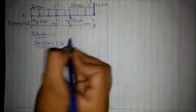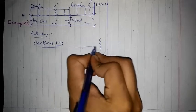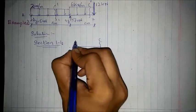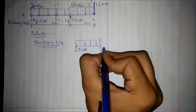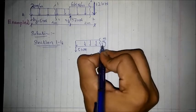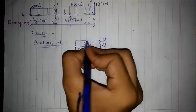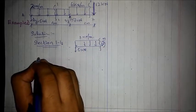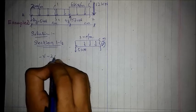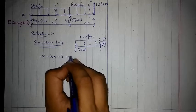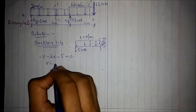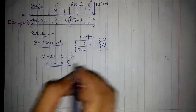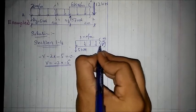To find the equations, we need to draw the free body diagram of section 1. The reaction is 5 kilo-newtons. We always assume certain directions where the section is being cut. The shear force equation would be: minus V minus 2x minus 5 equals 0, giving V equals minus 2x minus 5. That is our shear equation.